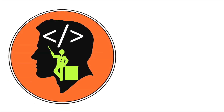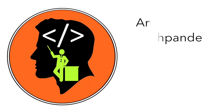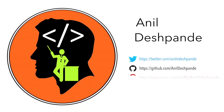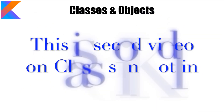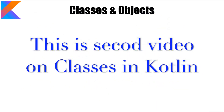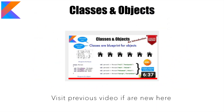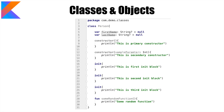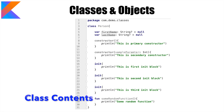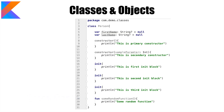Hi guys, co-tutor here and my name is Anil Deshpande. Welcome to another edition on classes and objects in Kotlin. In the previous video we have already seen the very basic aspect of what a class is and how a class is defined. So let's get started with what can be there in a class, or what are the contents of a typical class.